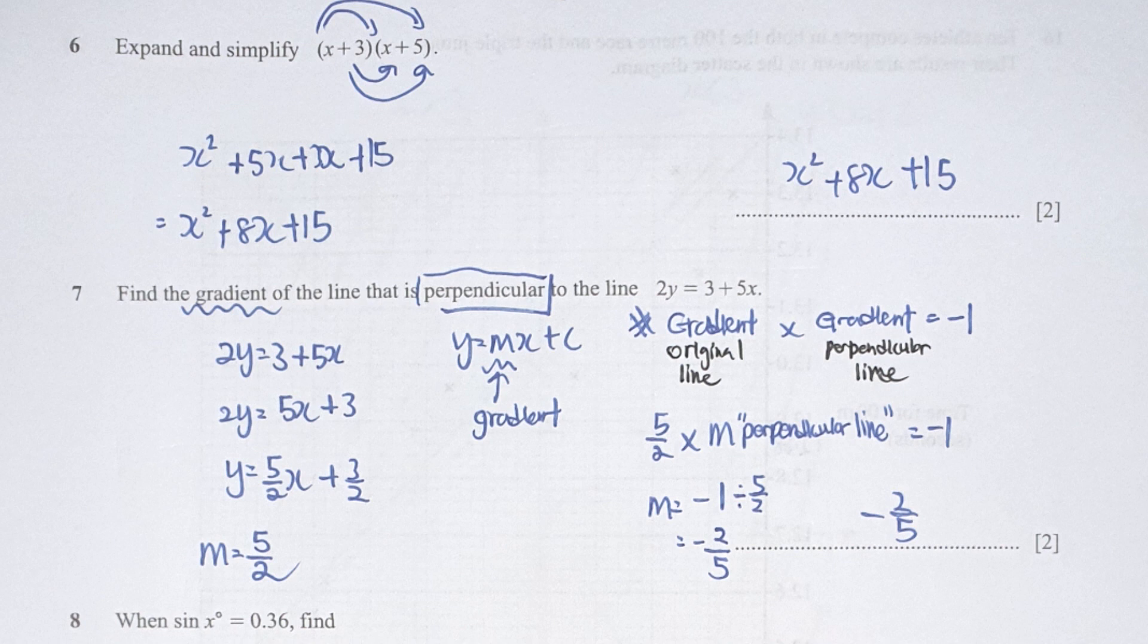Question 7: find the gradient of the line that's perpendicular to the line 2y equals 3 plus 5x. First, we are required to arrange the equation given, which is the original line, into y equals mx plus c.